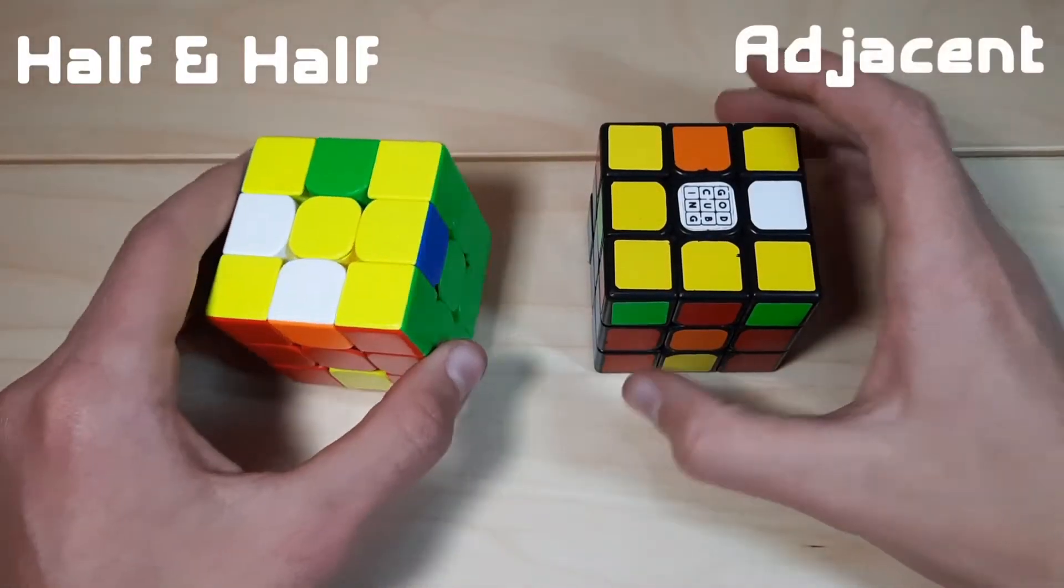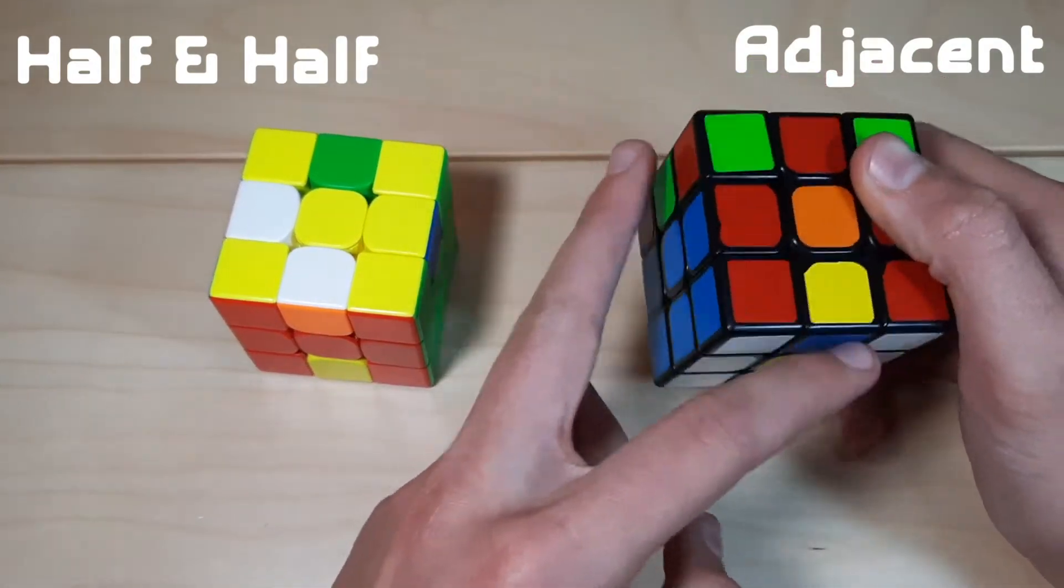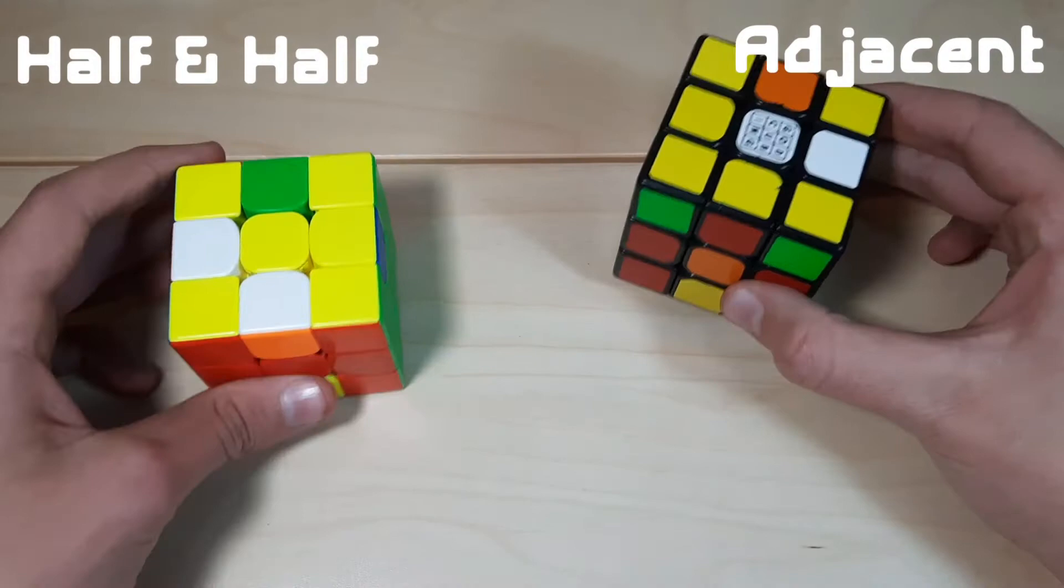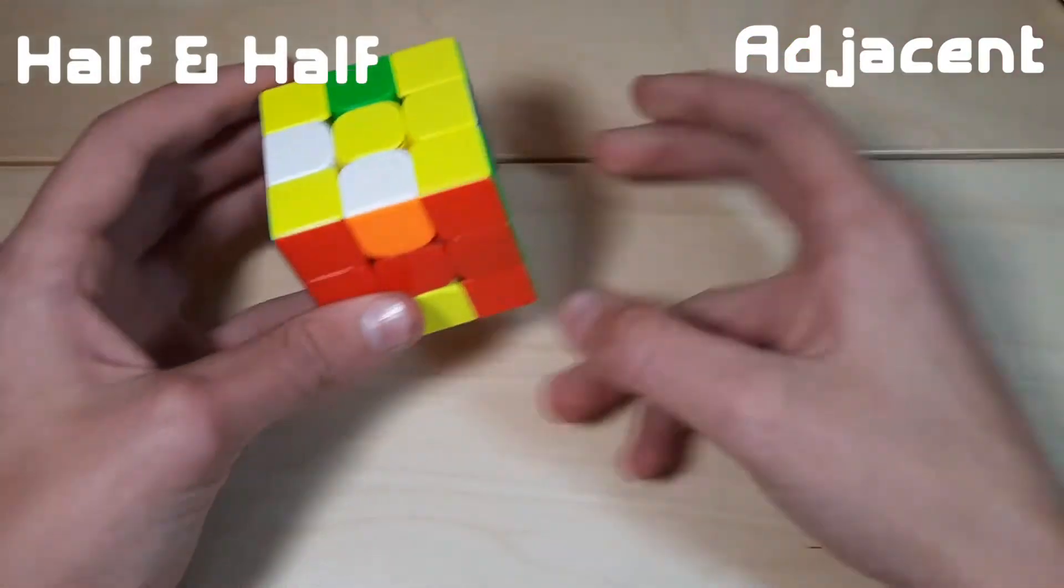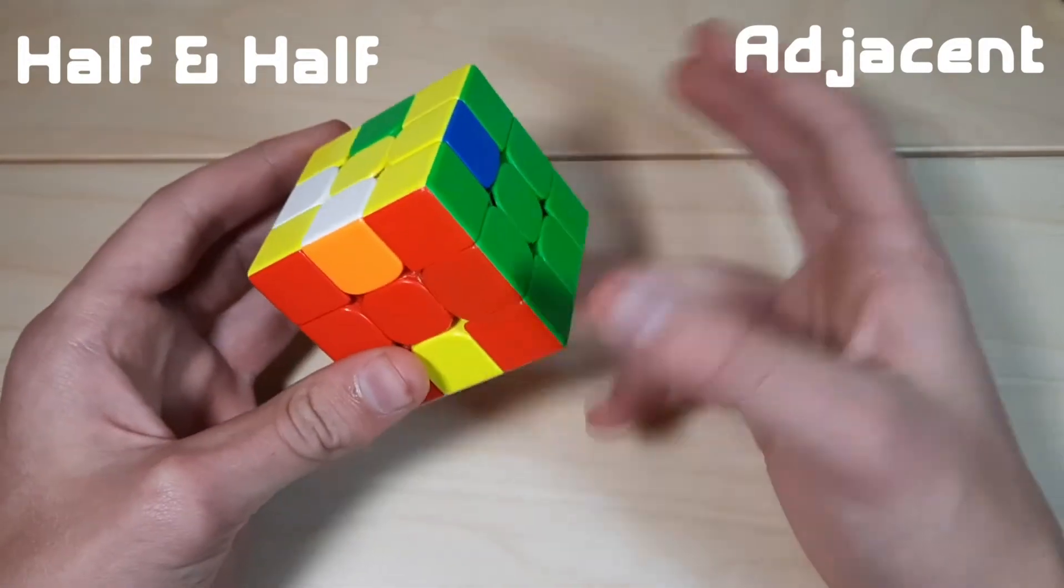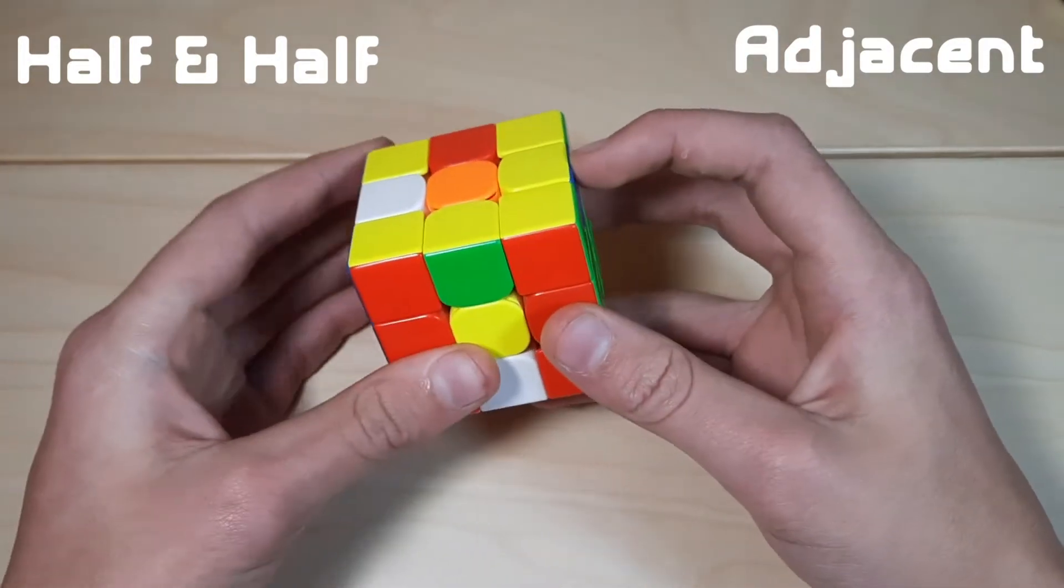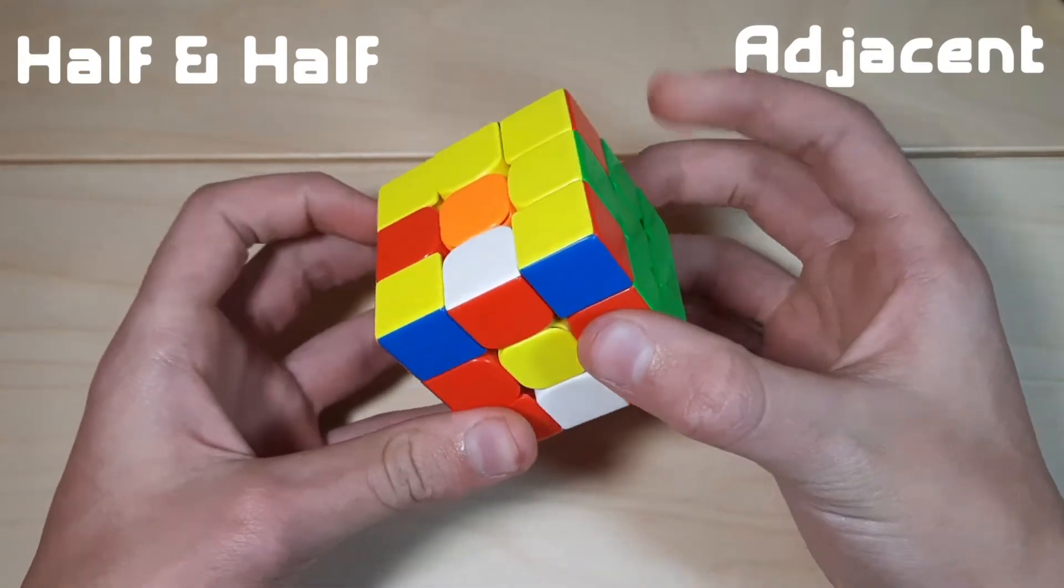With this final group of the half and half set, we have them adjacent. Here they're an M2 away, and here they're obviously adjacent. With both of these cases, we're going to be flipping both edges. Since these ones are both in the top layer, it's quite easy to see that we're going to flip this one with our first slice, do a U move, and continue that slice to flip the second one.